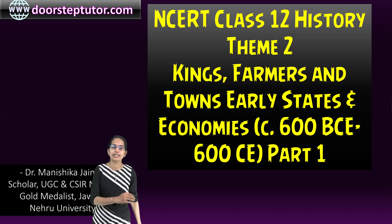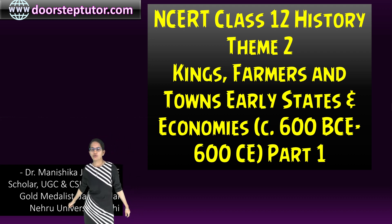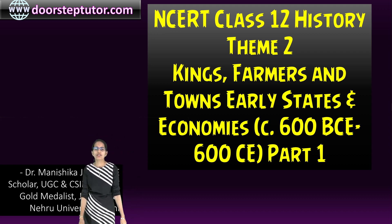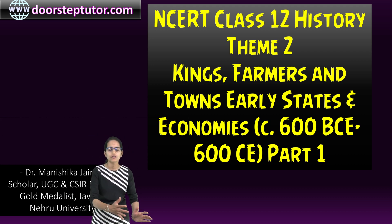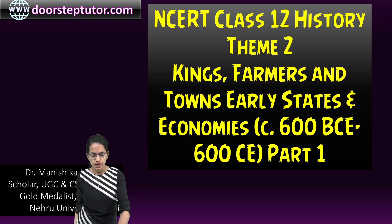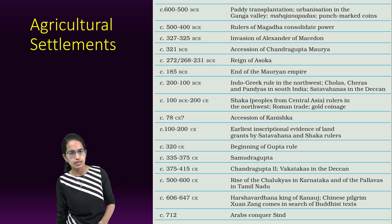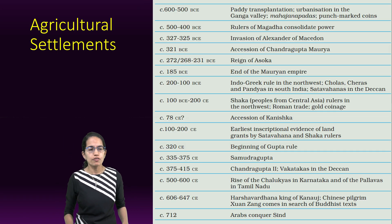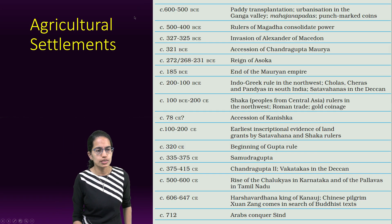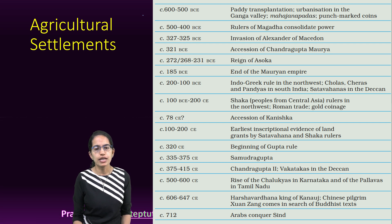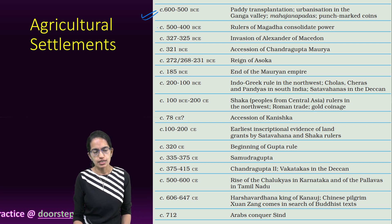Let's move forward with the second theme of Class 12th history, which talks about kings, farmers, towns and early states and economies. If we talk about 600 BC, this was the period where paddy transplantation started.